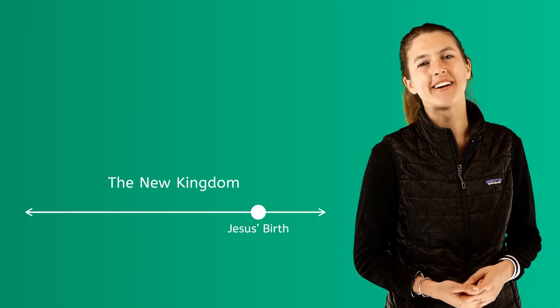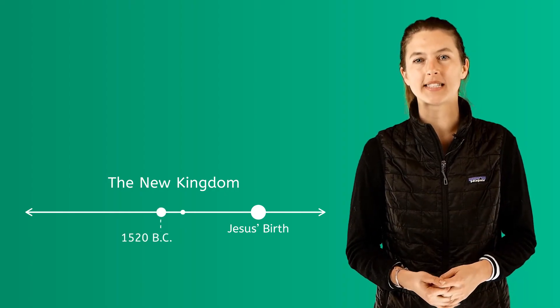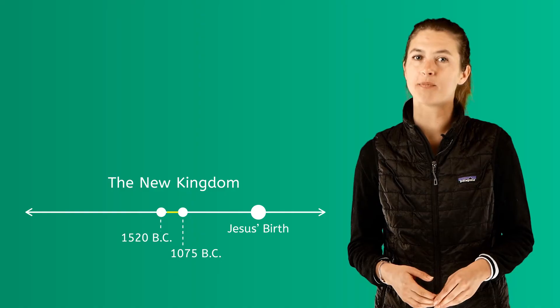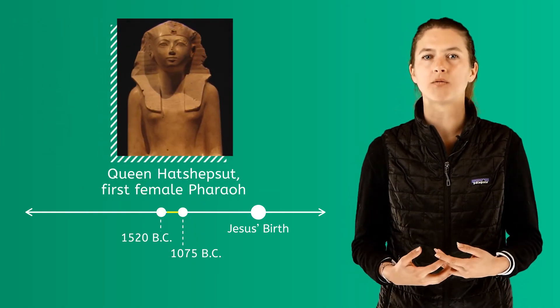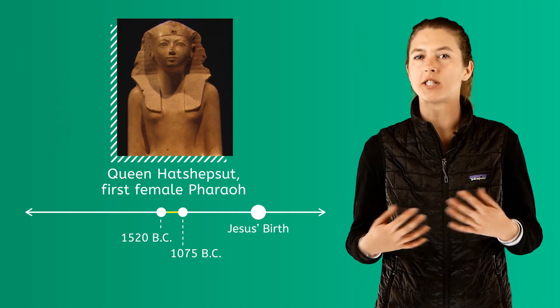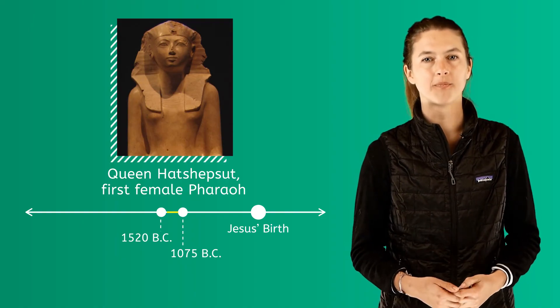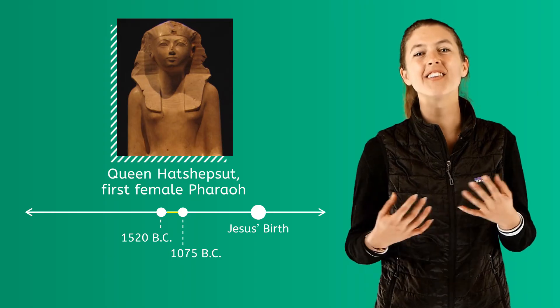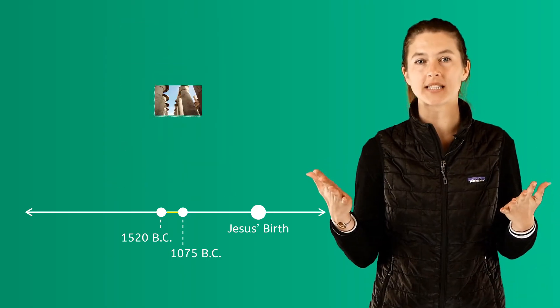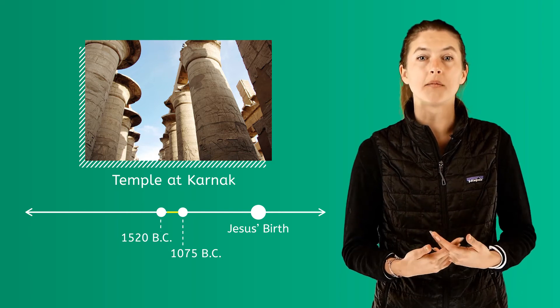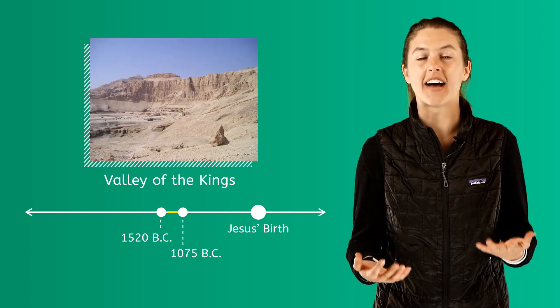The New Kingdom period, which lasted from 1520 BC to 1075 BC, saw the Hyksos people expelled from Egypt. Pharaohs once again ruled Egypt and Hatshepsut would become the very first female pharaoh. One of the most magnificent creations from this time was a temple at Karnak that was built in a place known as the Valley of the Kings.